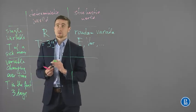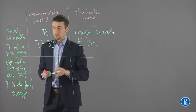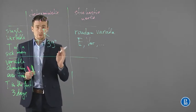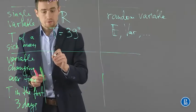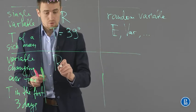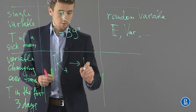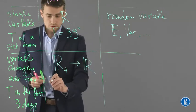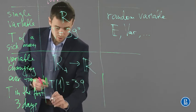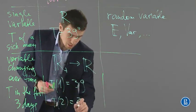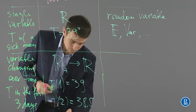If we are in the deterministic world, we can just measure the temperature every day or every hour as you wish. So we get a function from R+ to R. This function can be equal to 39 on the first day, to 38.5 on the second day, and so on.